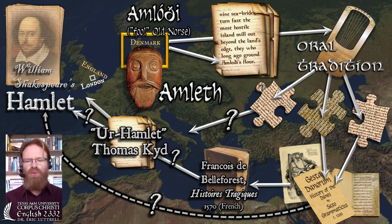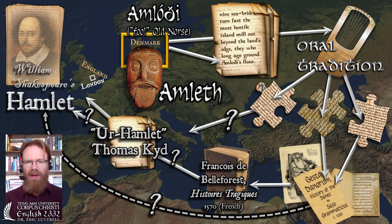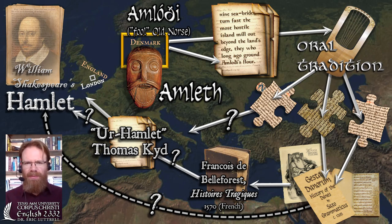One of those shows up in a French work called The History of Tragedy by François de Belleforest, written in French in 1570 — about 30 years before Shakespeare's play Hamlet was first performed. But we don't know that Shakespeare could read French, and Belleforest's account wasn't translated into English until after Shakespeare's play was performed. So unless Shakespeare could read French, it's unlikely he got it from this version.